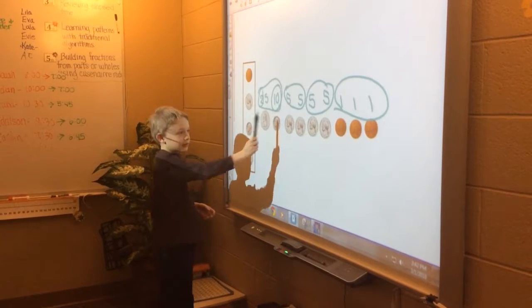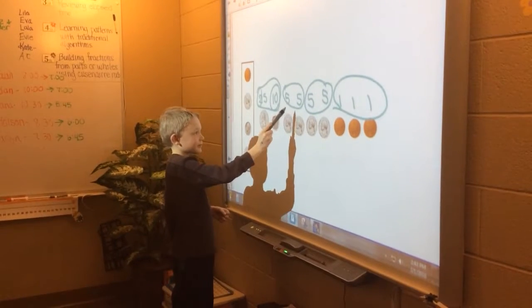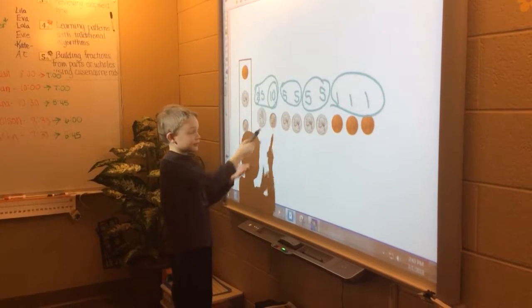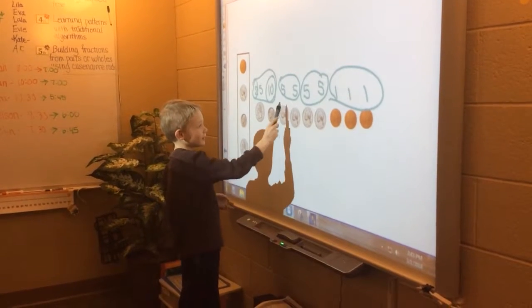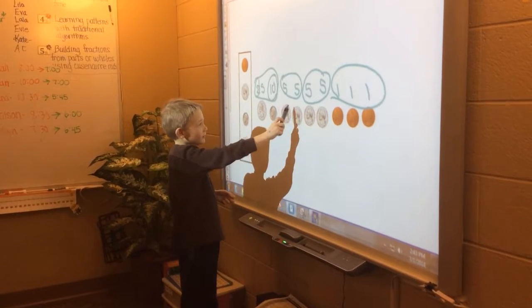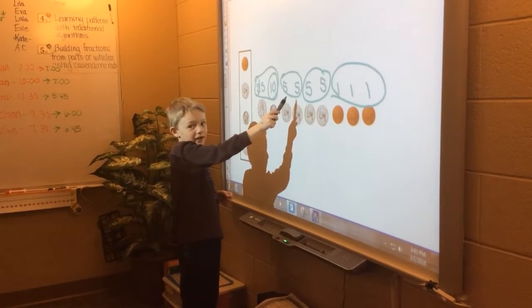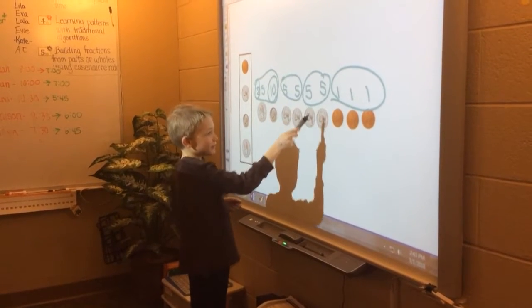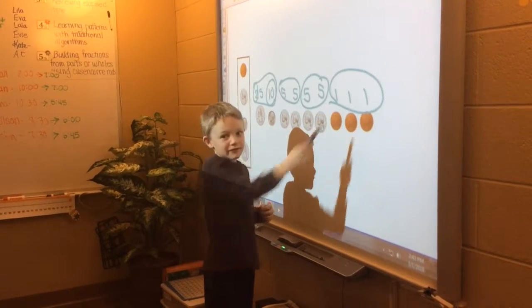I put another ten. And how much did you get then? 25 and ten were 35, and then 45, then 55, then 56, 57, 58.